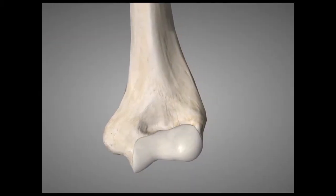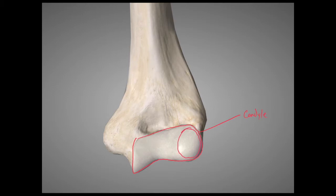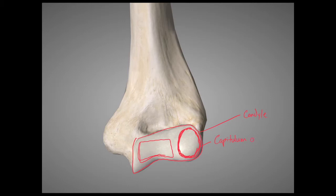Zooming into the distal most part of the humerus, we have the condyle of the humerus. There are specific landmarks on the condyle itself. This circular one kind of looks like a small head — remember the head of the radius is kind of circular and roundish itself. So this little head is going to be called the capitulum of the humeral condyle. Capitulum means little head.